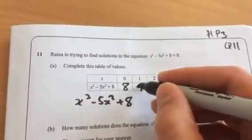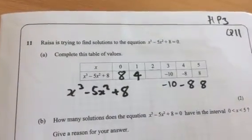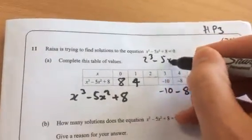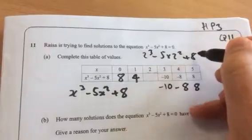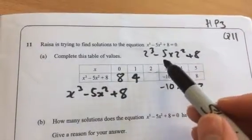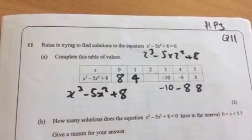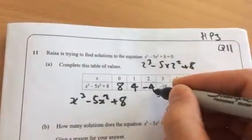And when x is 2? 2 cubed minus 5 times 2 squared plus 8, we should come up to minus 4. That's 8, that's minus 20, that's plus 8. You say it's minus 4? Yes.